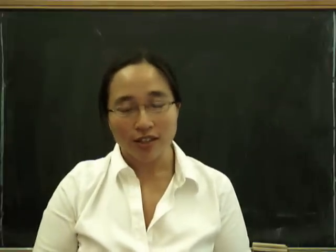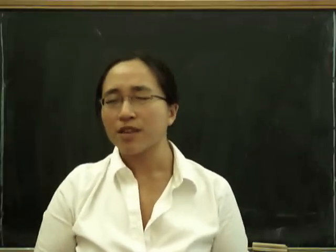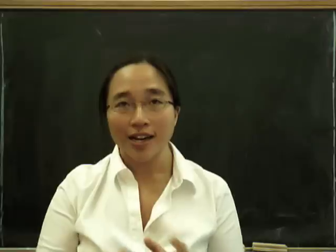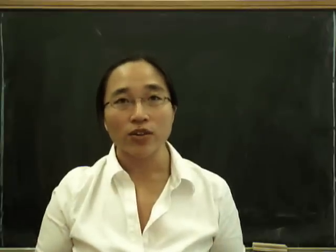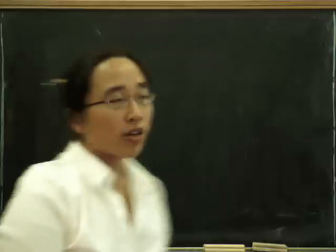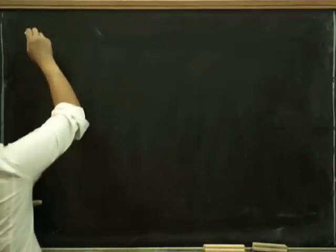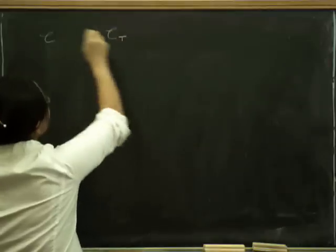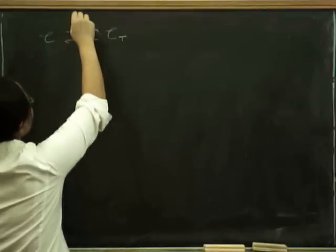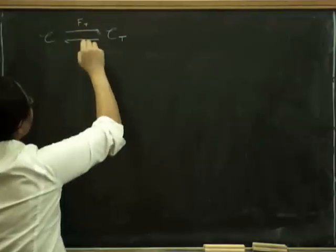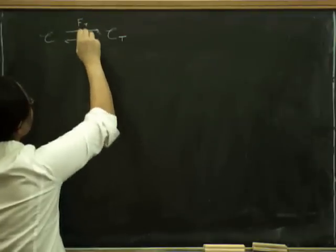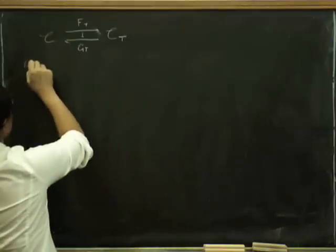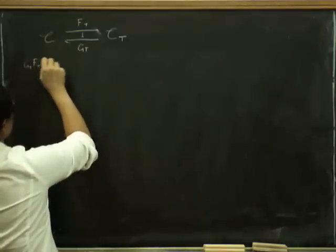Today we're going to construct the adjunction that comes from the Kleisli category. We started with a monad T on a category C, constructed the Kleisli category for T, and I'm now going to show you that there's an adjunction giving rise to the original monad. We'll construct functors F_T and G_T such that G_T ∘ F_T equals T.